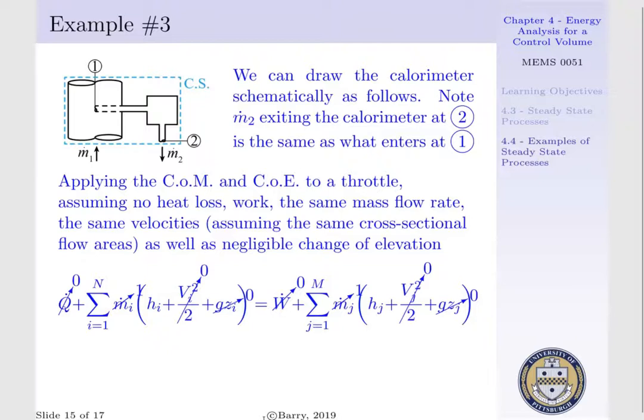Now, if we apply our conservation of mass and conservation of energy equation to the throttle, assuming that we have no heat loss to or from our throttle, and that our throttle, i.e. calorimeter, is not doing any work or has any work done onto it, and we assume our velocities at state 1 and state 2 are equal, and there are no changes of elevation between state 1 and state 2, we can cross out q dot, w dot, v1 squared per 2, v2 squared per 2, gz1, and gz2.